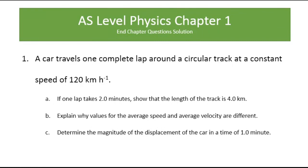Question number one: a car travels one complete lap around a circular track at a constant speed of 120 kilometers per hour. This question has three parts. Part one: if one lap takes two minutes, show that the length of the track is four kilometers. Part B: explain why the values for average speed and average velocity are different. Part three: determine the magnitude of the displacement of the car in a time of one minute.